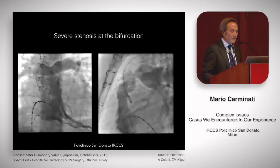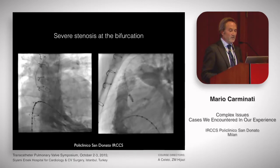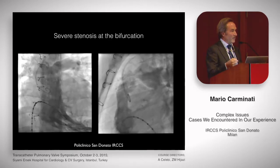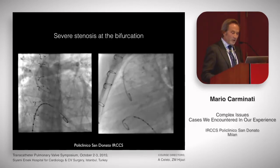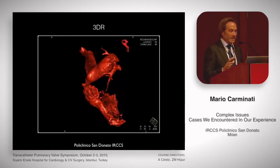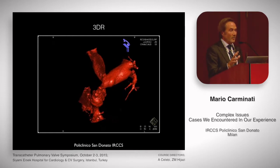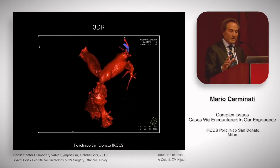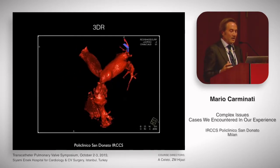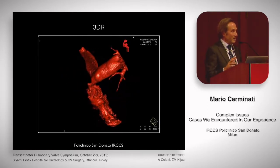This is the angiogram performed in the cath lab. You see in AP and lateral projection the severe supravalvular stenosis very close to the bifurcation. We also did a 3D rotational angiogram to better understand the anatomy. You see the severe stenosis involving the bifurcation of both right and left pulmonary branches. So this is going to be complex — with this kind of anatomy it's not easy to implant a stent properly.